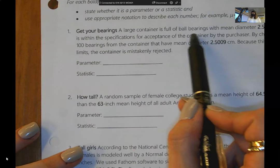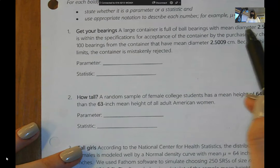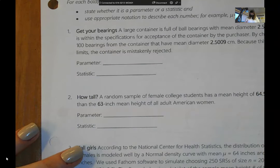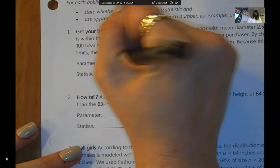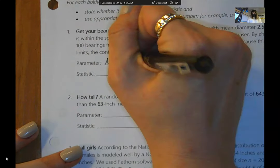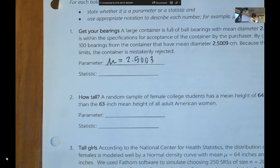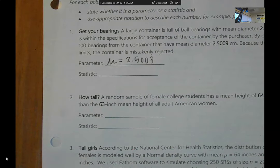So mu equals 15 or x bar equals whatever. So on this first one, a large container full of ball bearings with a mean diameter of 2.5003 centimeters. That is your true population value.